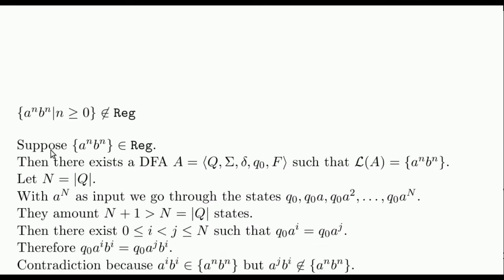We will prove it by contradiction, supposing that it is regular. If it is so, then there exists a deterministic finite automaton A that recognizes it. Let N be the amount of states of A. If we run the automaton A with N As as input, the automaton will run through all the states.